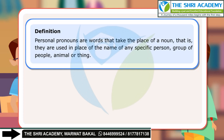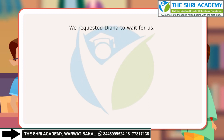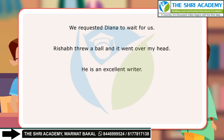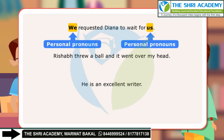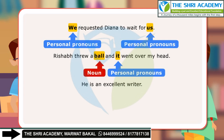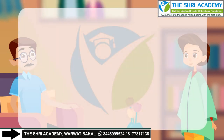Let us look at a few sentences. We requested Dinah to wait for us. Rishabh threw a ball and it went over my head. He is an excellent writer. In the first sentence, 'we' and 'us' are personal pronouns as both words are used in place of a group of persons. In the next sentence, 'it' is a personal pronoun as the word is used in place of the noun ball. In the third sentence, 'he' is a personal pronoun as the word is used for a specific person who is an excellent writer.